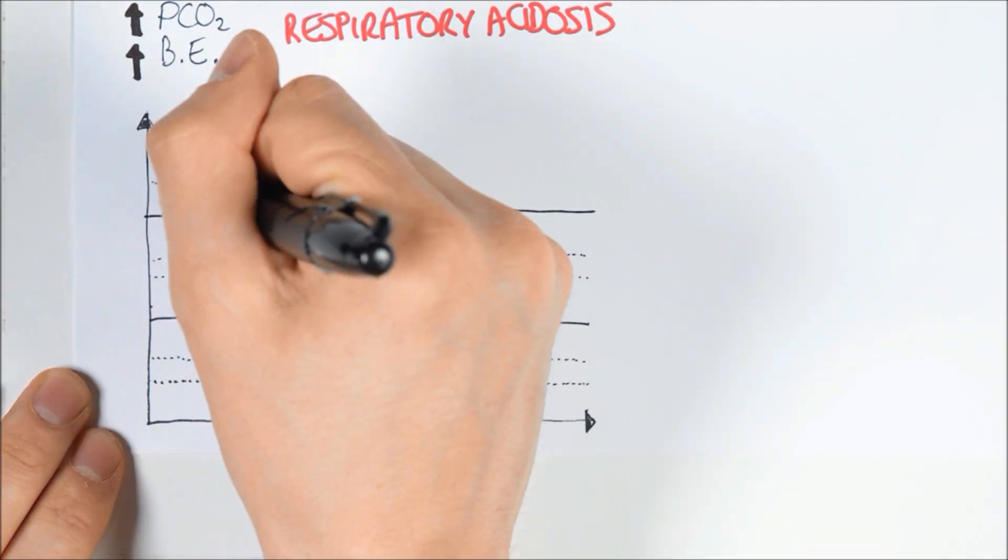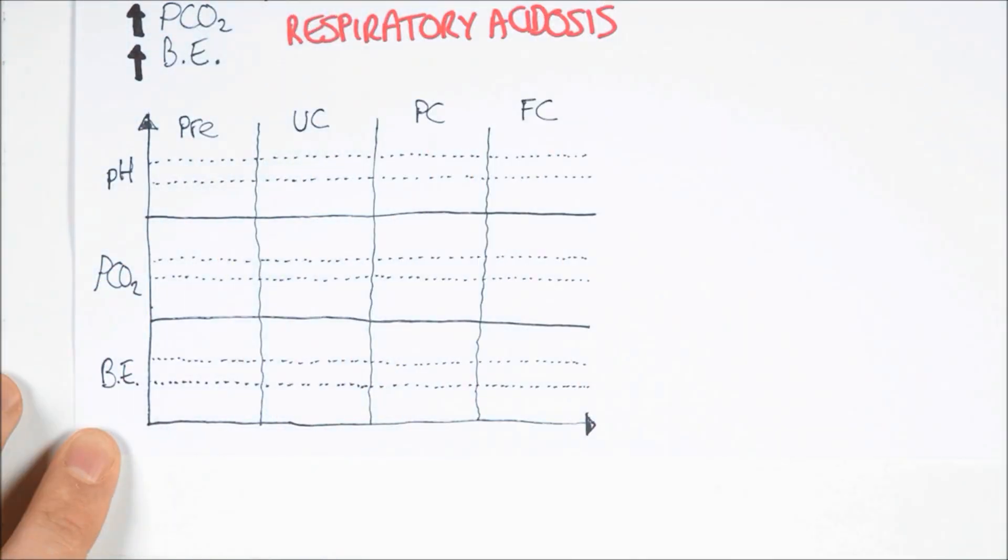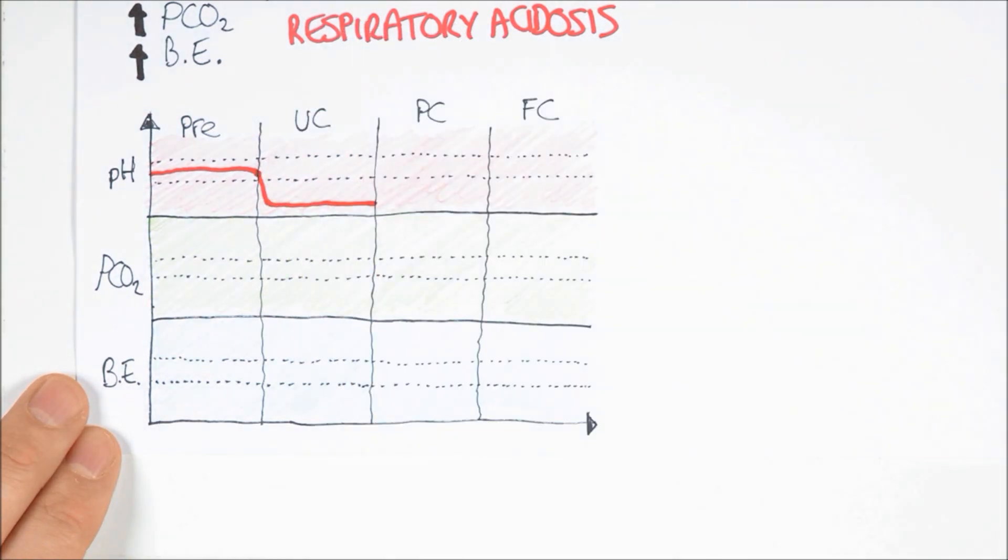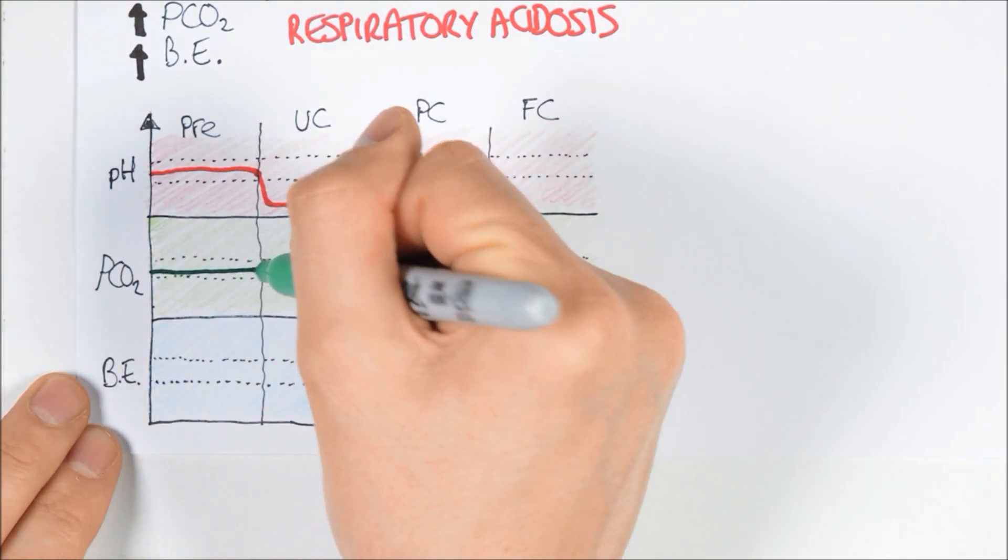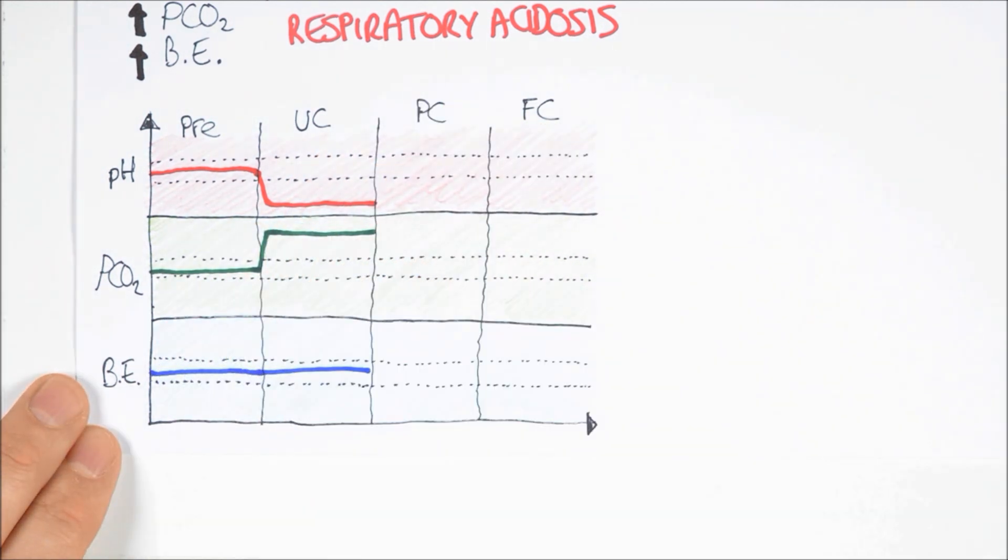We can produce a very simple time-change graph for these variables. Before the change in ventilation, the pH, PCO2, and base excess are all normal. Once the patient starts to hypoventilate, the PCO2 steadily rises with a matched drop in pH and no change in base excess.